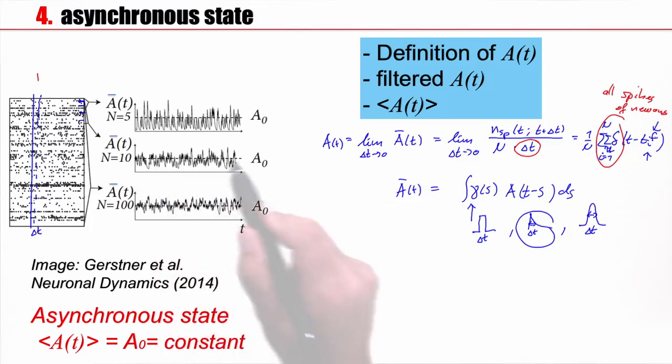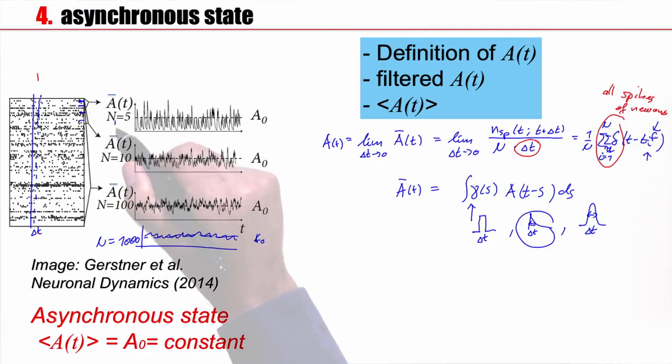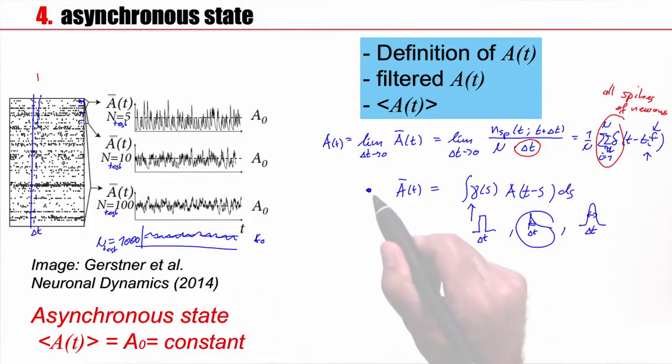I could do the same with 10 neurons and get this population activity. I can do it with 100 neurons, I get this. I can do it with 1000 neurons, and I get something very similar, except that the fluctuations will become smaller and smaller. The size of the fluctuations for a fixed filter will depend on the number of neurons from which I record. Let's call this the test size.